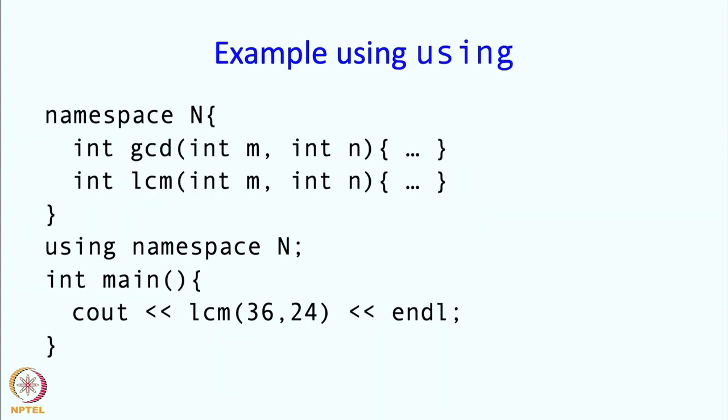So if I write this directive then the previous program becomes like this. I will write namespace N int gcd int lcm and then I have this using namespace over here.